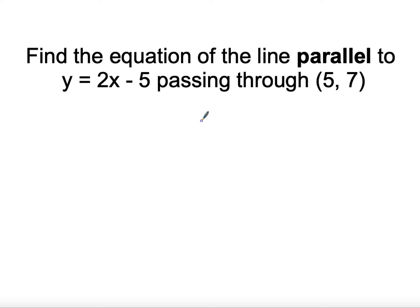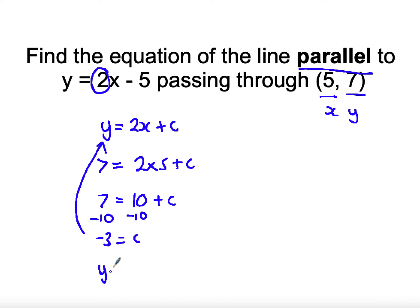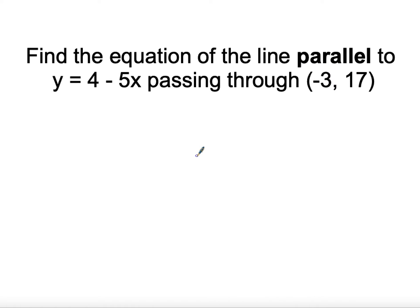Parallel means same gradient; gradient of this line is 2, so y equals 2x plus c. Substituting the point (5, 7): 7 equals 2 times 5 plus c, so 7 equals 10 plus c. Since 10 plus something gives 7, c must be negative — subtracting 10 from both sides gives c equals negative 3. So the equation is y equals 2x minus 3. Quick check: two lots of 5 is 10, minus 3 gives 7. Correct.